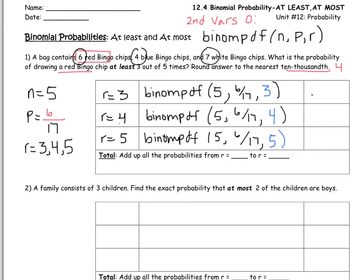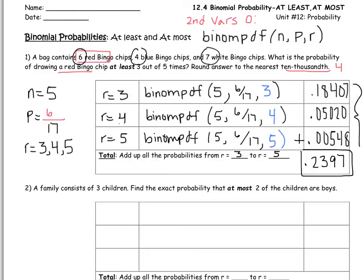So I got for the first 0.18407, for the second 0.05020, for the third 0.00548. So if we add up all of the probabilities from r is three to r is five, so that's what I'm going to put here, from three to five, and we round that answer to the nearest four decimal places, we'll get 0.2397, and that is my final answer. So basically all we did was add up all three of those probabilities.